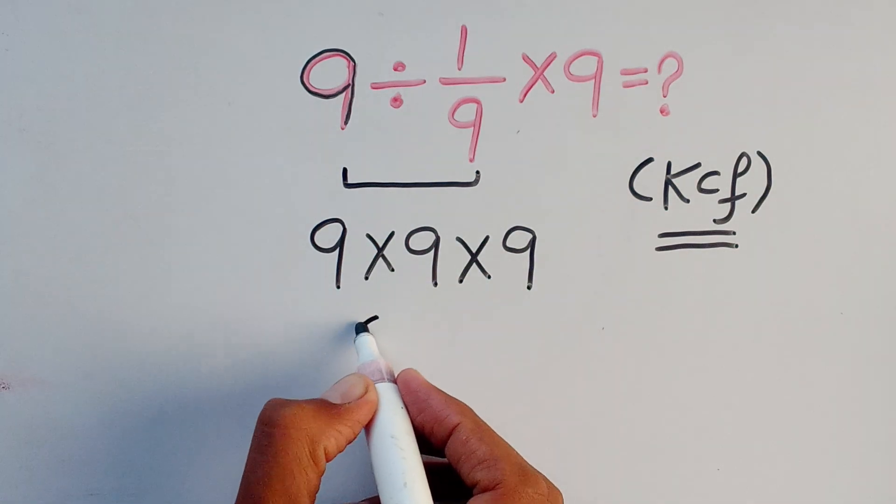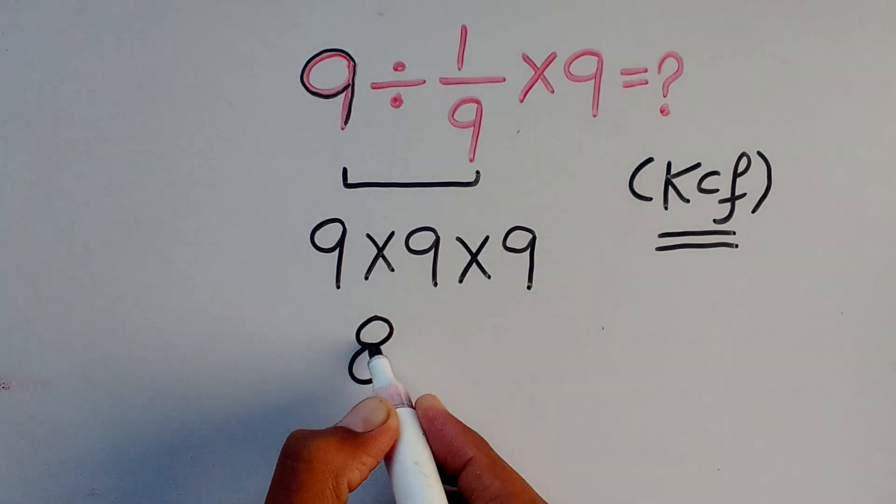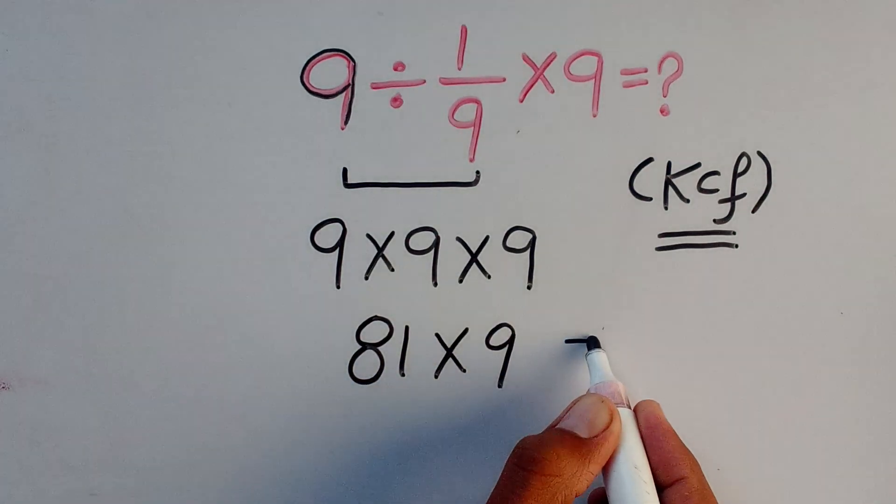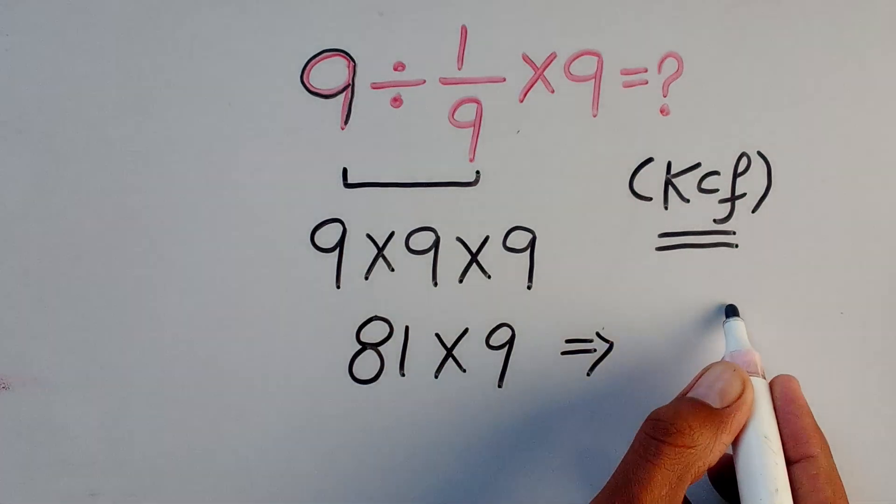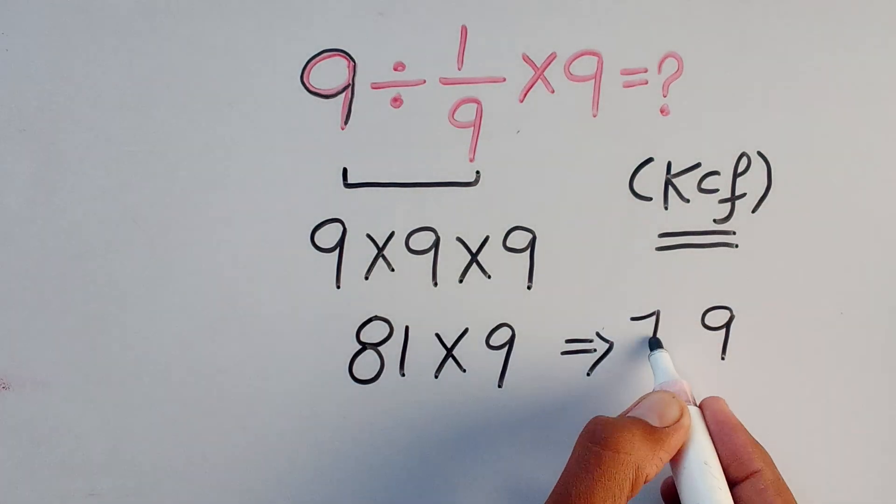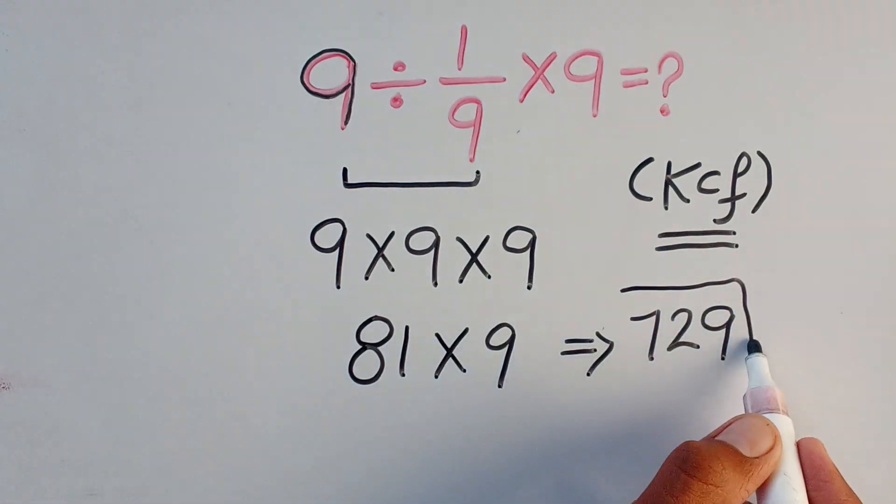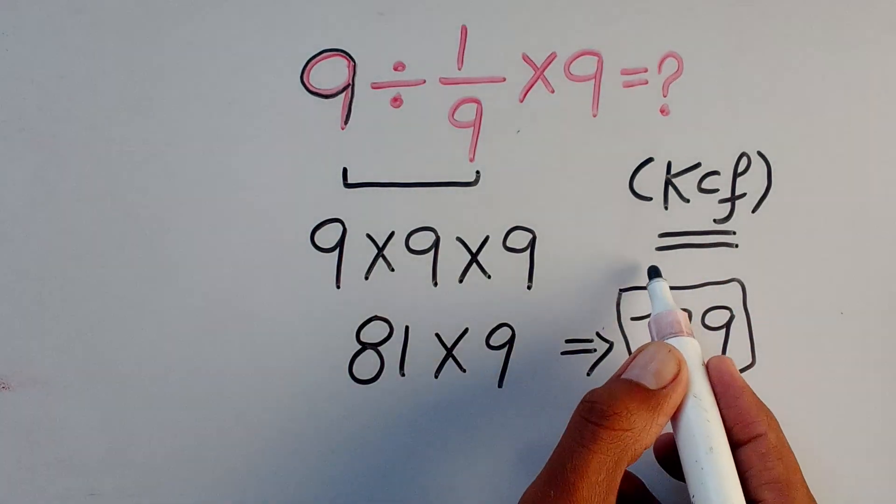Now here, 9 times 9 equals 81, multiply by this 9. So, 9 ones are 9 and 9 times 8 equals 72. So, this is the final answer of this math question.